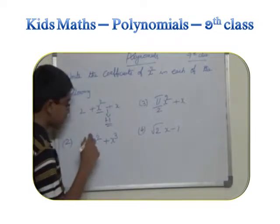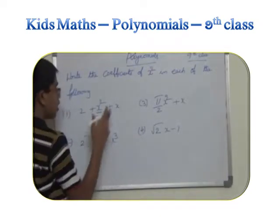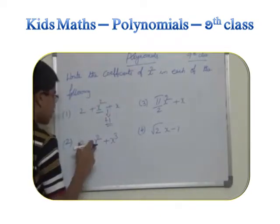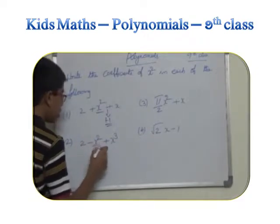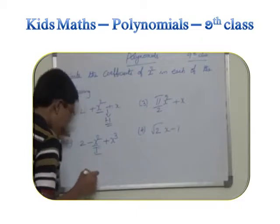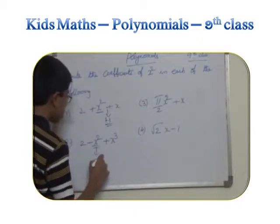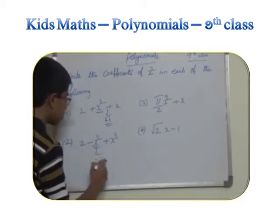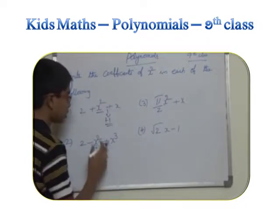Now second one, 2 minus x squared plus x cubed. The coefficient of x squared which is here also has no constant term. So this is minus 1, because there is a minus sign.